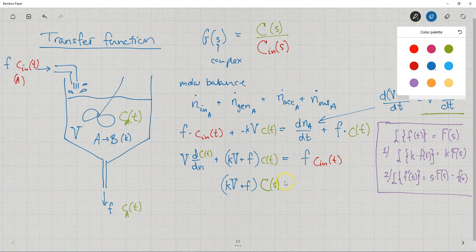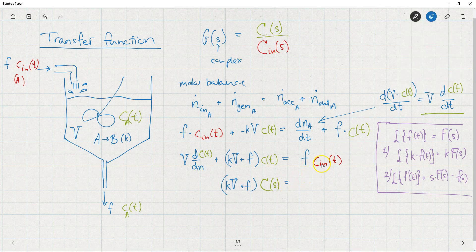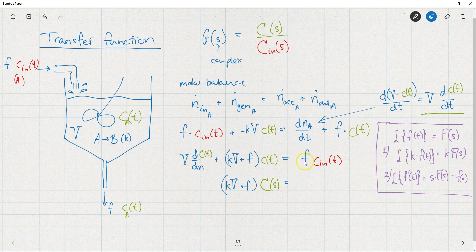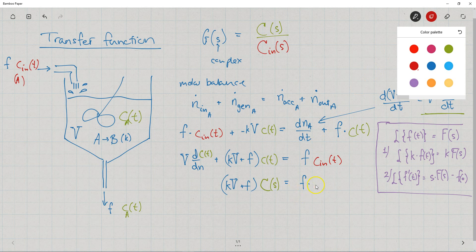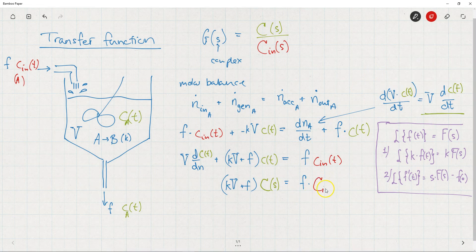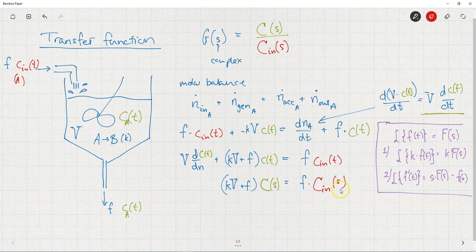For this term here on the right-hand side, there I have a constant times a function. When I Laplace transform this term here, I get that constant times the Laplace transform of C_in, which I'll call capital C_in of S.